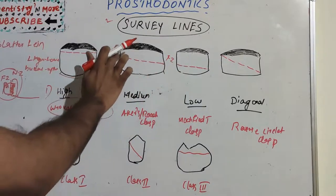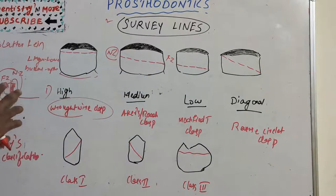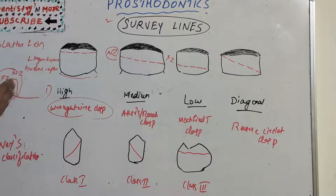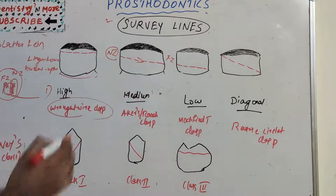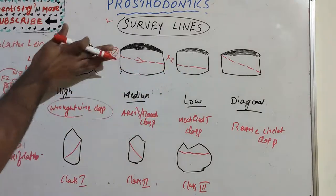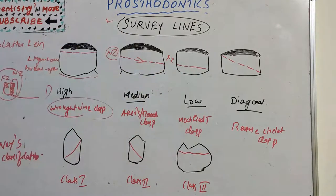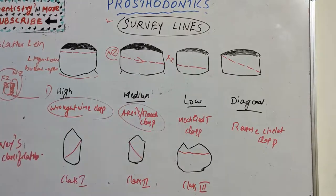The part of the tooth coming toward or near the edentulous area is the near zone. The medium survey line has a slight occlusal-gingival inclination from the near zone to the far zone — you can see a slight inclination toward the far zone. For the medium survey line, we use an Akers or Roach clasp.